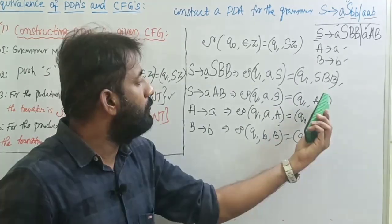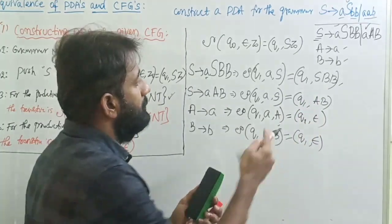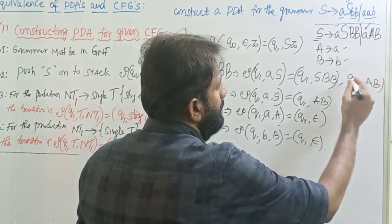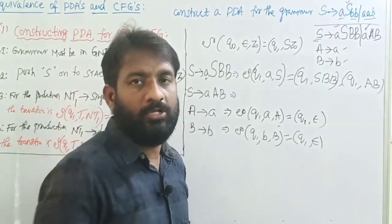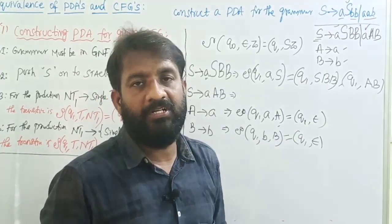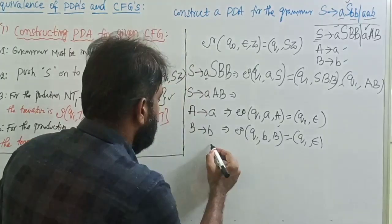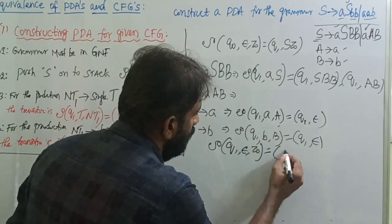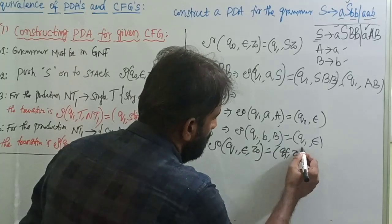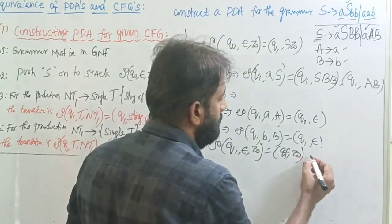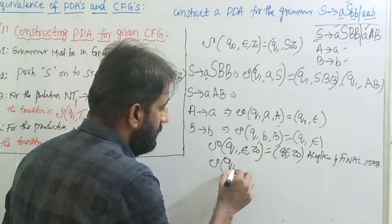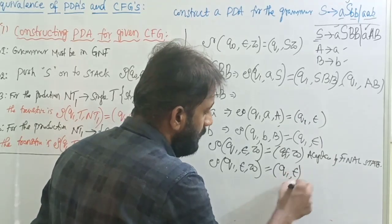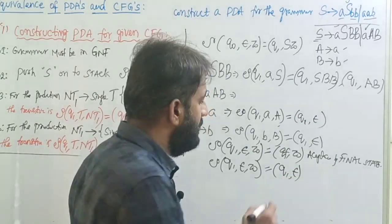Observe that for the same transition we have more than one move, so we can write it as a single transition for Q1 with capital A and B. Now at last, write the acceptance transitions. Acceptance by final state: δ(Q1, ε, Z₀) = (Qf, Z₀). Acceptance by empty stack: δ(Q1, ε, Z₀) = (Q1, ε).